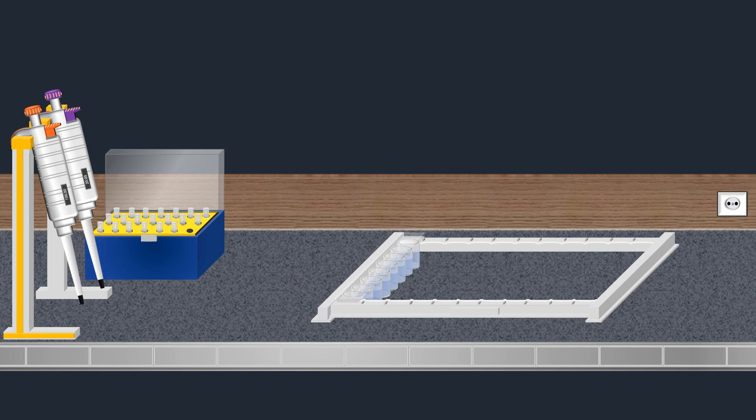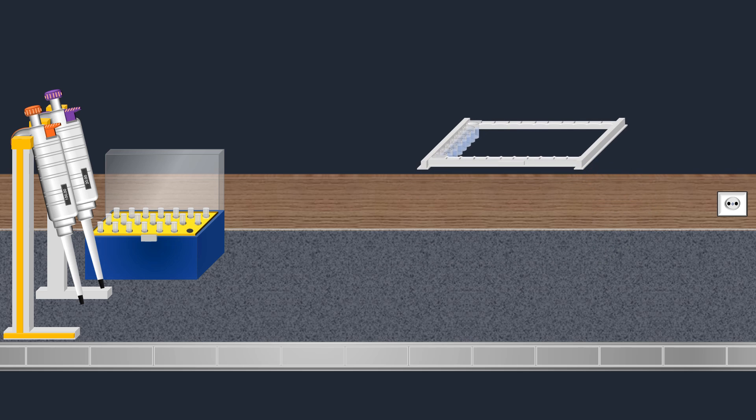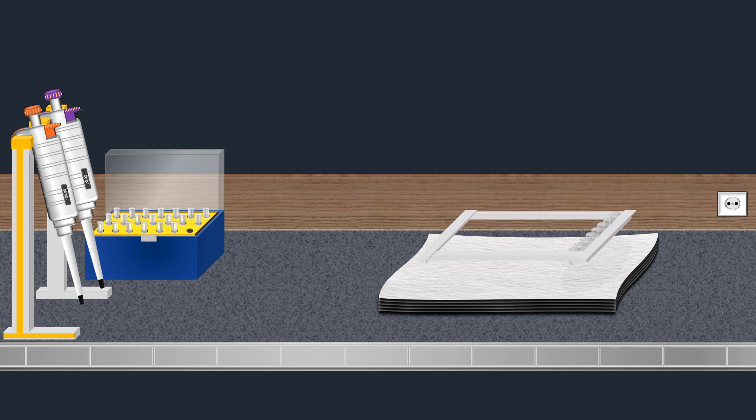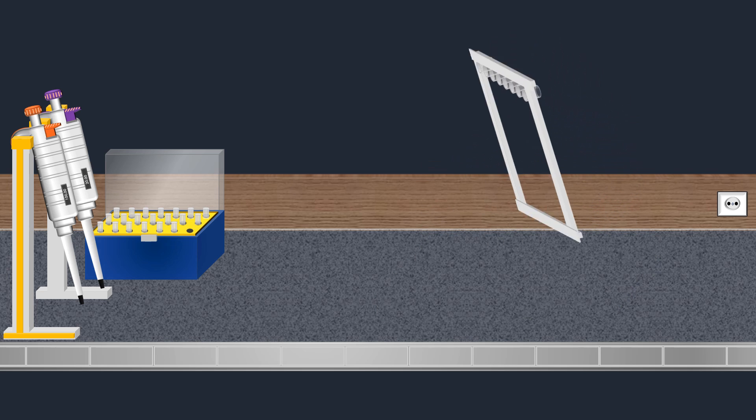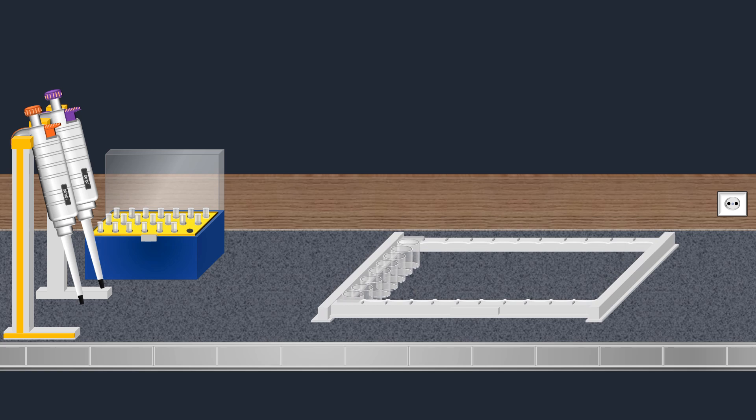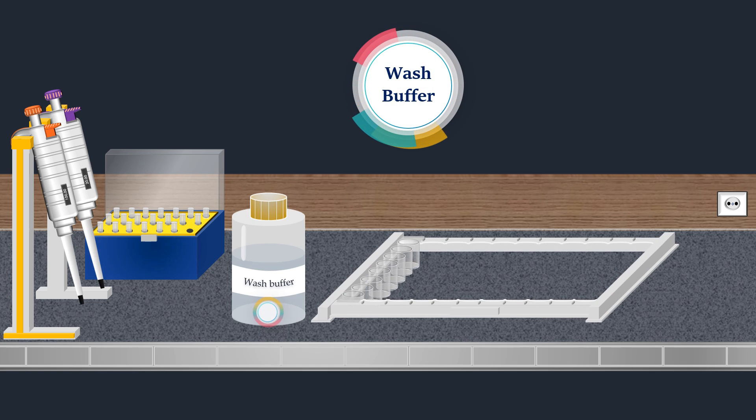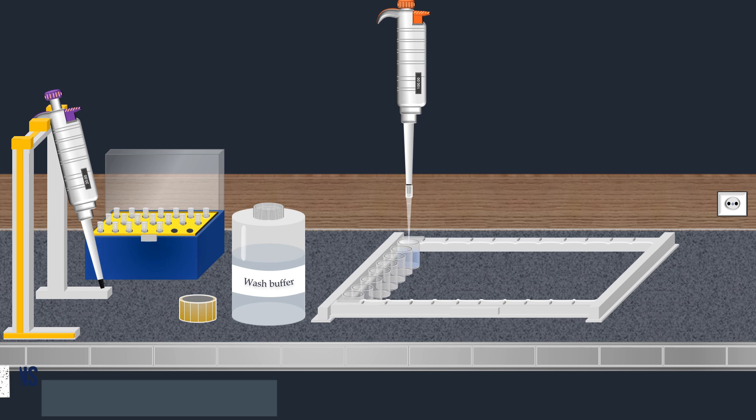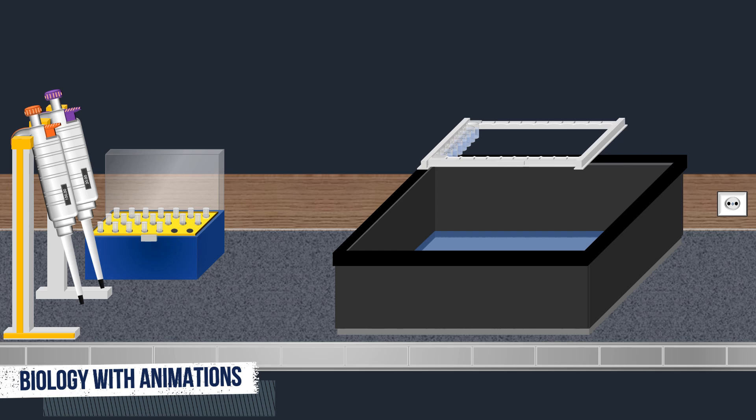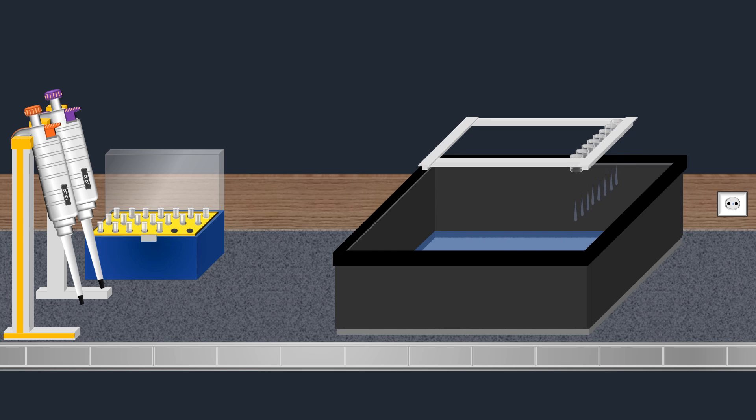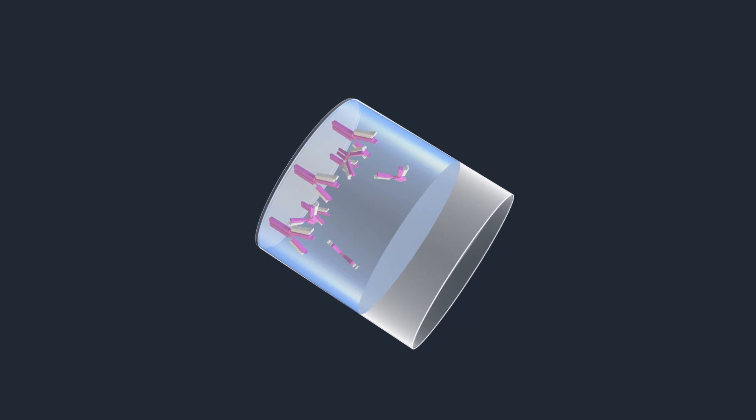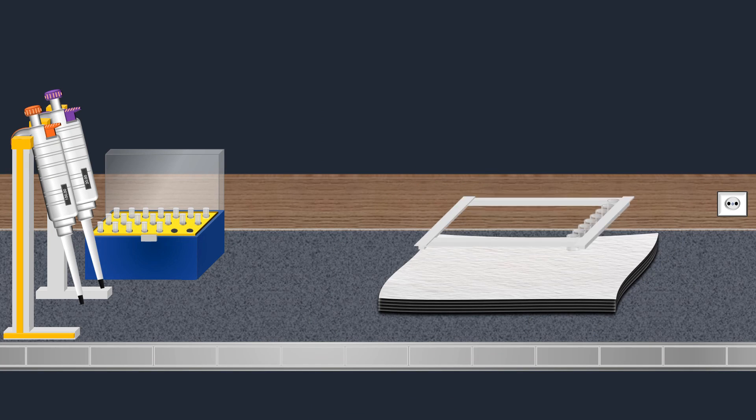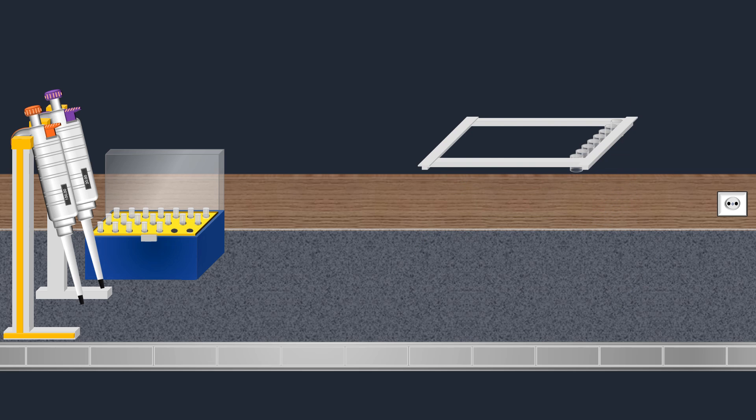After immobilizing antibodies onto the solid phase, the adhesive plastic is removed. The well strip is then overturned and tapped to eliminate antibody solutions, and an absorbent paper towel is used to ensure thorough removal. After eliminating excess solutions, the wells undergo thorough washing with a specially formulated wash buffer. This solution rinses the wells, removing any unbound substances. Using a wash buffer helps eliminate any unbound antibodies. After discarding the wash buffer, an absorbent paper towel is used to remove any remaining liquid.